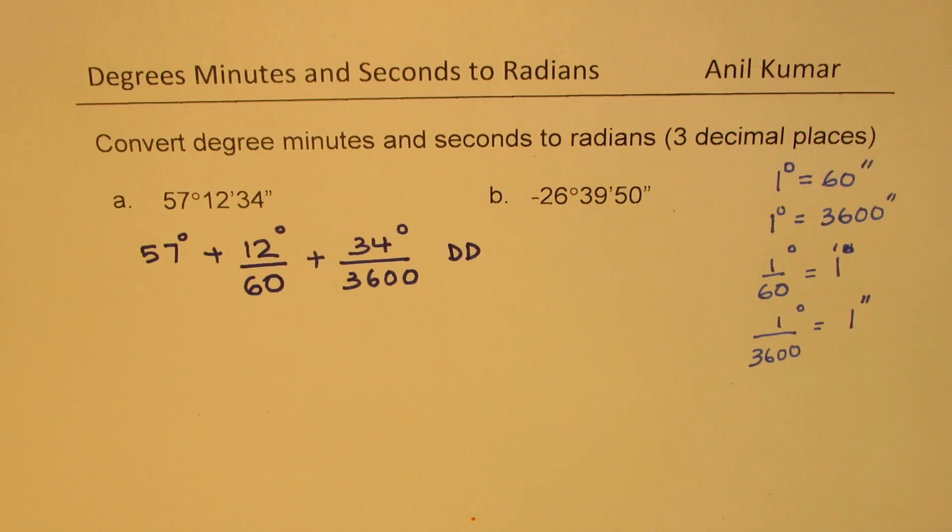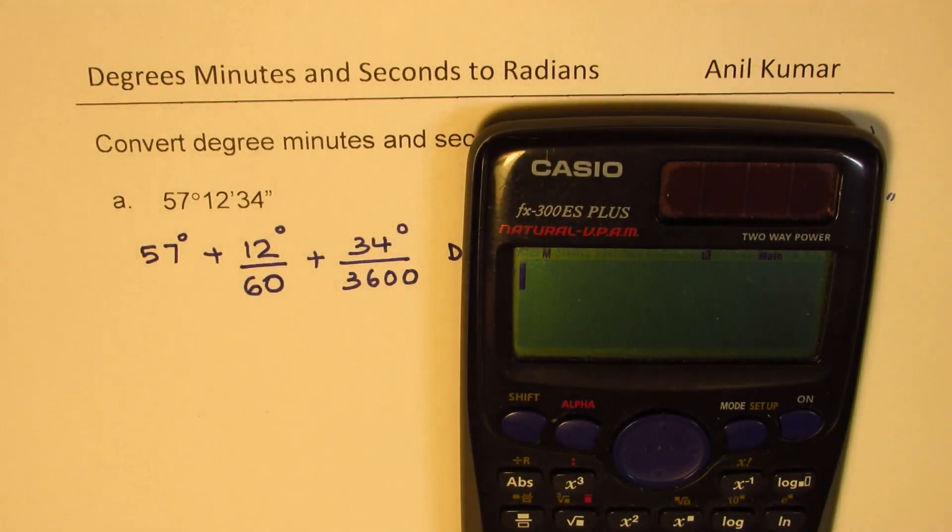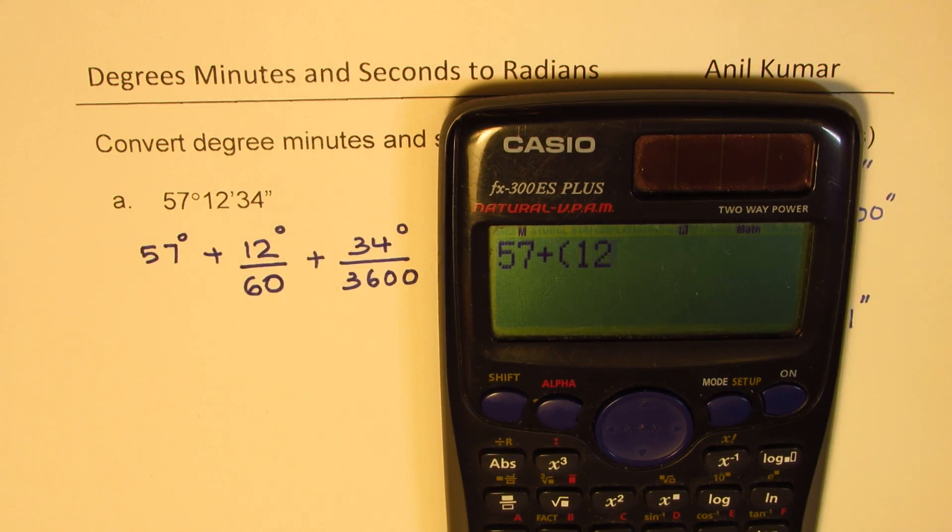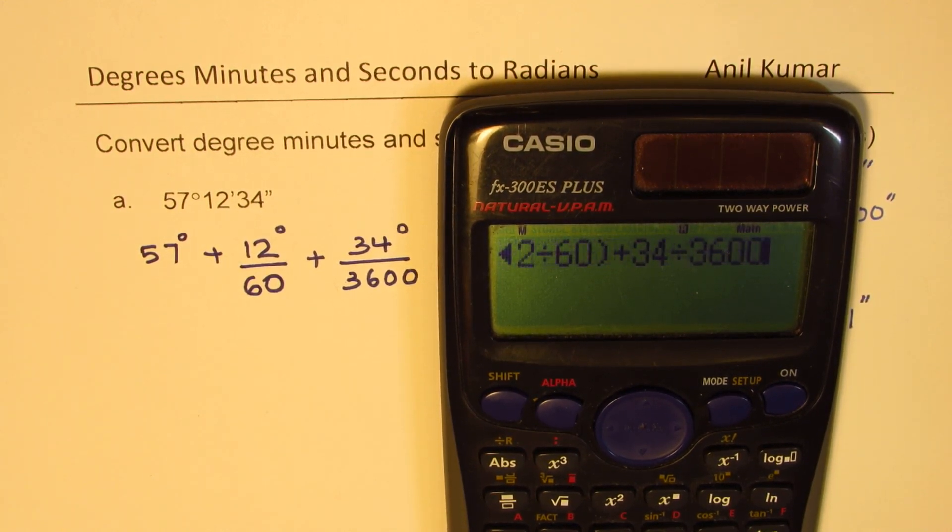Let's do this with calculator. We have 57 plus within brackets, let me write 12 divided by 60, bracket close, and then again plus 34 divided by 3600. So we can add it like this.